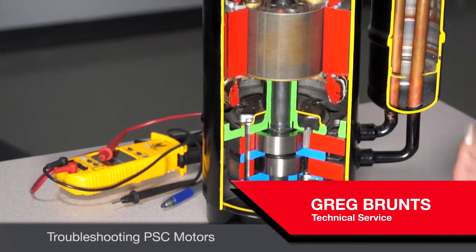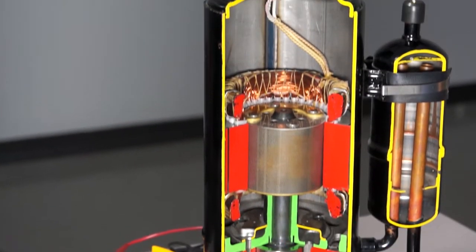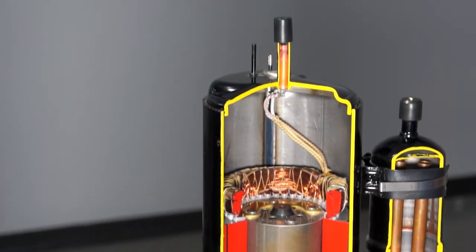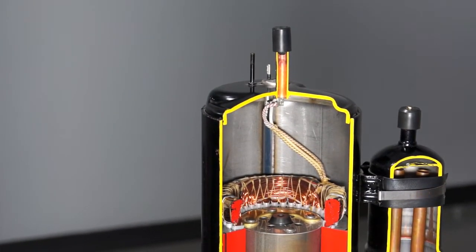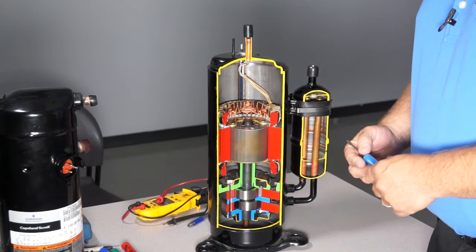Greg Bruntz with another useful tech tip for you. What I want to talk about today is the permanent split capacitor motors that are used in scroll compressors or even in a rotary compressor. What I have here is a cutaway view of a rotary compressor.